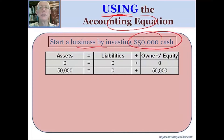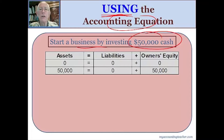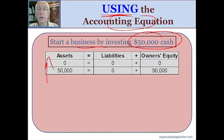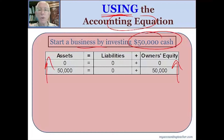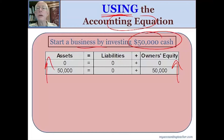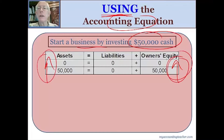We're going to do this from the standpoint of the business. From the business standpoint, the business is receiving cash, so the asset cash goes up. Where did that cash come from? It was invested by owners, so equity also went up. The accounting equation forces us to keep track of two things: anything come into the business? Yes — an asset. Where did it come from? It was invested by the owners.